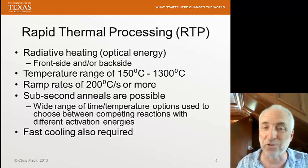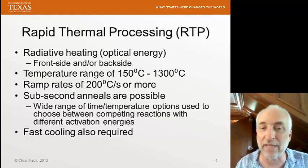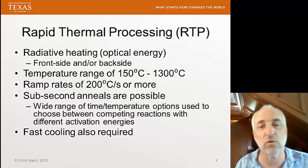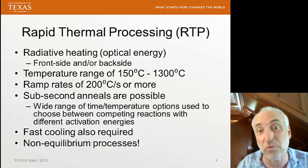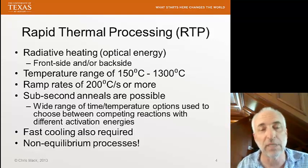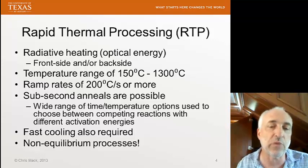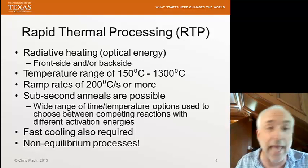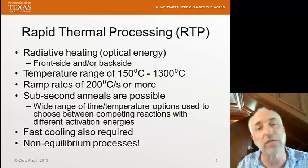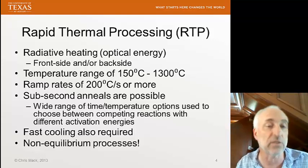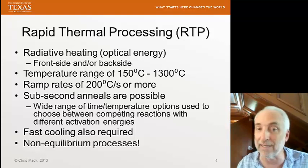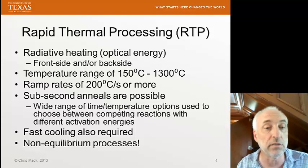For example, we can have fast recrystallization of the silicon wafer after ion implantation but with very low diffusion, because recrystallization has a higher activation energy than diffusion. We also have to have fast cooling and control the whole cycle — while it's cooling, it's still diffusing. And these are completely non-equilibrium processes, which means we can do interesting things like dope at higher than the solid solubility of the dopant in silicon.